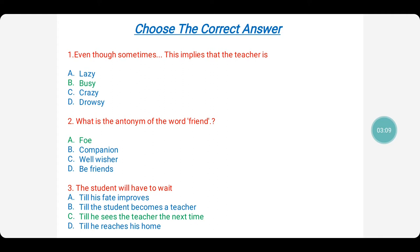What is the antonym of the word friend? Antonym means opposite. Is it foe, companion, well-wisher, befriend? Yes, the right answer is foe. F-O-E. Foe means enemy. The opposite of friend is enemy. The other word for enemy is foe.